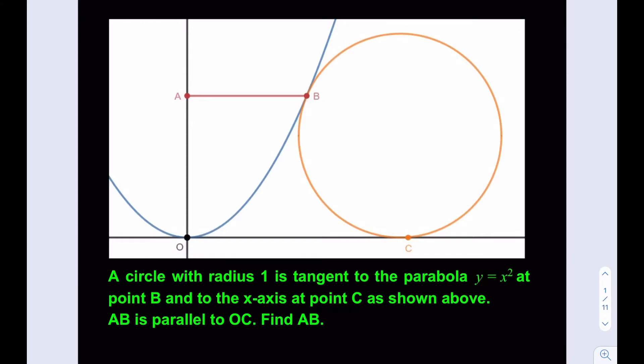We have a circle with radius 1 that is tangent to the parabola y = x² at point B and to the x-axis at point C as shown. AB is parallel to OC. We're supposed to find AB, which is basically the distance between the point of tangency and the y-axis — or equivalently, the x-coordinate of point B.